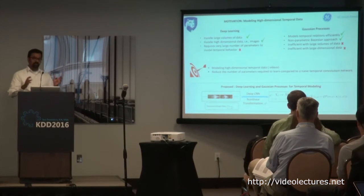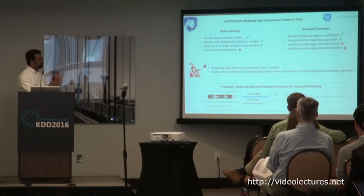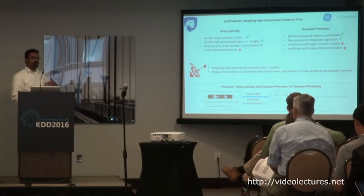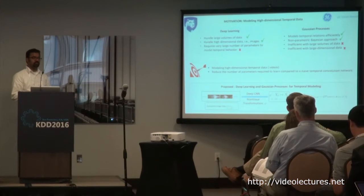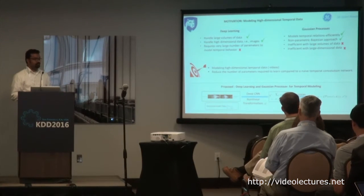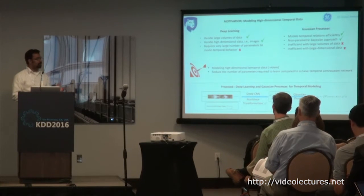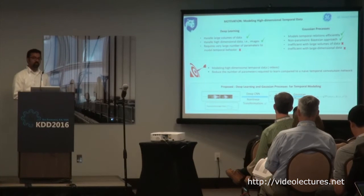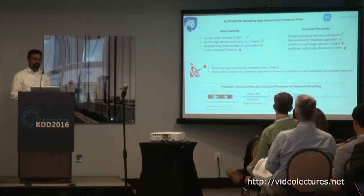Deep learning is good at handling large volumes of data — in fact it needs large volumes of data. It works very well for images, but when looking at temporal behavior, the number of parameters grows very fast if you are analyzing many sequences of images such as video data. Gaussian processes, on the other hand, can model temporality but don't scale well with data dimension or size. So the idea was: can we use deep learning for the initial bit — analyze the images — and then develop temporal models on top of the extracted features?